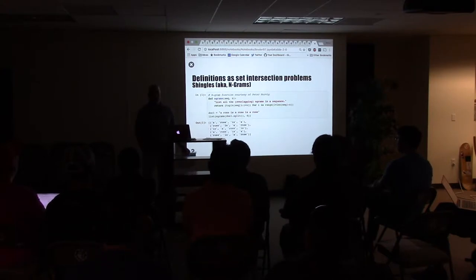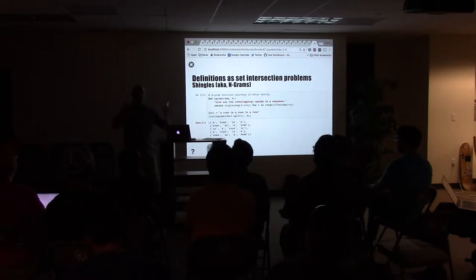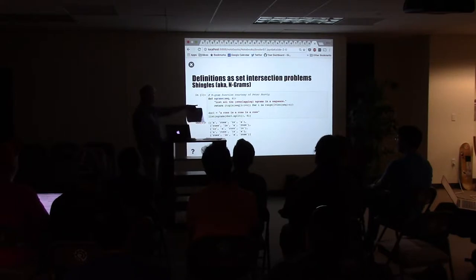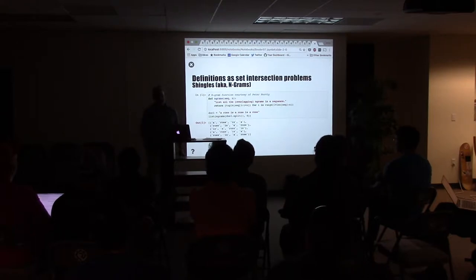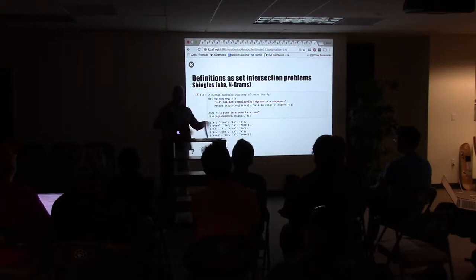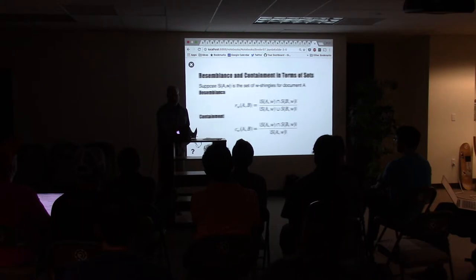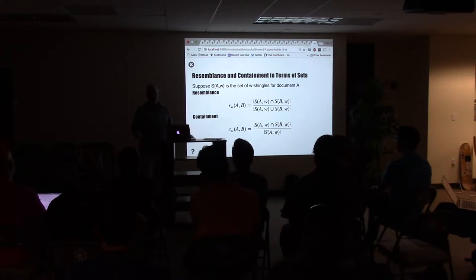He defines these metrics in terms of set-intersection problems, but before that he goes to a section about what he calls shingles. If you've done natural language processing or string similarity matching, you've probably run into this. Sometimes these are also called n-grams — probably the more typical term in the NLP world. Basically, it's just sequences of tokens. In this case, the tokens are words in the document. This is a function from Peter Norvig's website that takes the document 'a rose is a rose is a rose' and divides it into shingles of length four, or four-grams. You can see how they overlap each other like shingles on a roof, which is why they're called shingles.